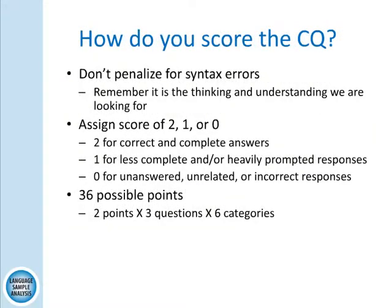How do you score it? Do not penalize a student for syntax errors — it's the thinking and the understanding that we are looking for. You assign a score of two, one, or zero. Two for correct and complete answers with no prompts. One for less complete or heavily prompted responses. Zero for unanswered, unrelated, or incorrect responses. There are 36 possible points for each book — that's two points times three questions times six categories.